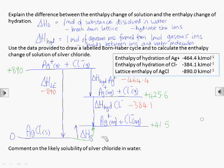So the enthalpy change of solution is from zero to plus 41.5, so 41.5 kilojoules per mole for silver chloride.